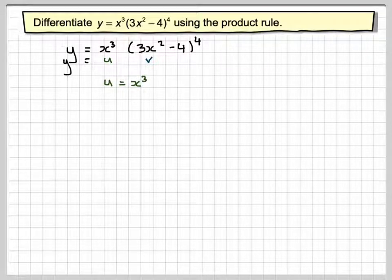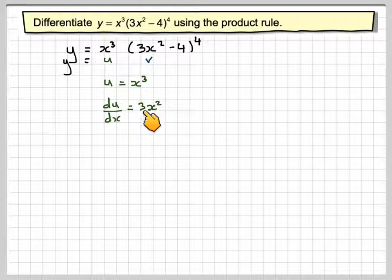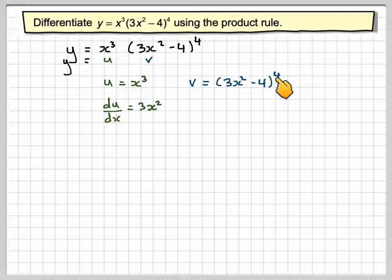So let u equal x cubed, differentiate that, you're going to get 3x squared. And then v equals 3x squared minus 4 to the 4.